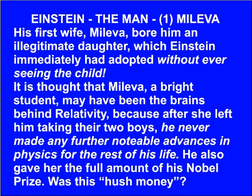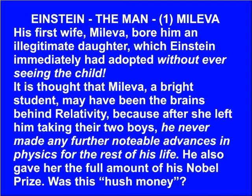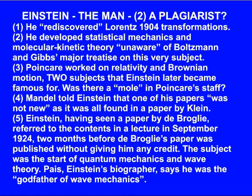What sort of a man was Einstein? His first wife, Mileva, bore him an illegitimate daughter, which Einstein immediately had adopted without ever seeing the child. It is thought that Mileva, a bright student, may have been the brains behind relativity, because after she left him taking their two boys, he never made any further notable advances in physics for the rest of his life. He also gave her the full amount of his Nobel Prize. Was this hush money? Was Einstein a plagiarist?